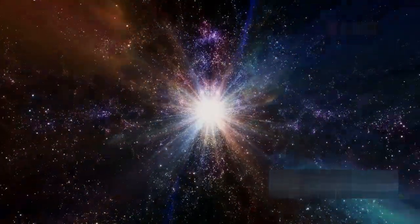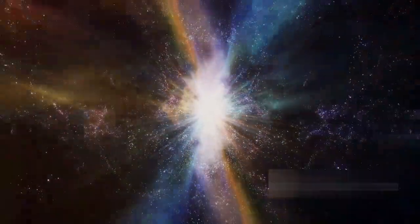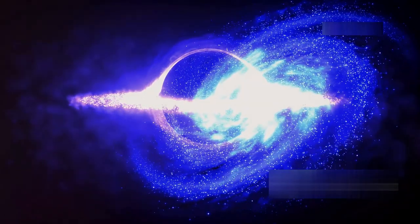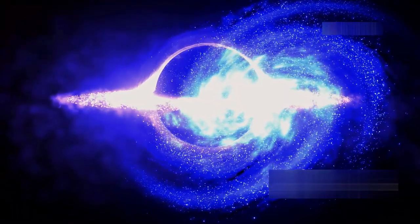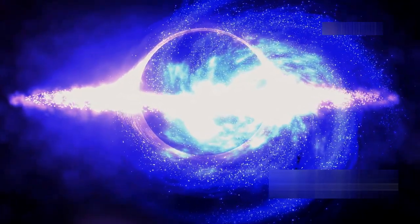When we observe one of these bursts, we are witnessing events that happened billions of years ago. In both cases, whether short or long bursts, the newly formed black hole emits jets in opposite directions, composed of particles accelerated to nearly the speed of light. When these particles interact with the surrounding matter, they emit the gamma rays that we detect.